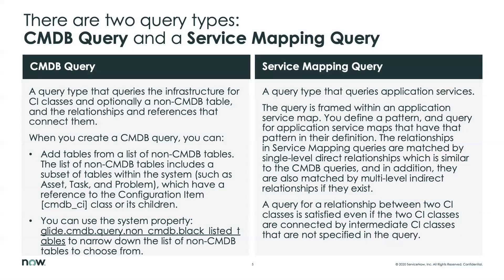Inside the Query Builder, there are two different types of queries. The first — which we're going over today — is the CMDB query, which queries infrastructure for CI classes and non-CMDB tables. When you create the query, you can add tables from a list of non-CMDB tables including subsets like asset, task, and problem, which have references to configuration items. There's also a system property where you can limit the non-CMDB tables that you want people to choose from.